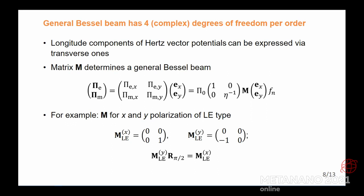And the point is this matrix is really simple, especially for the most of the known Bessel beam types. And for example, you can see here the matrices M for X and Y polarizations of LE type. Here they are. And it's really easy to check that these two matrices are related by the polarization rotation matrix. And that's exactly how these two fields are related, just by rotation.